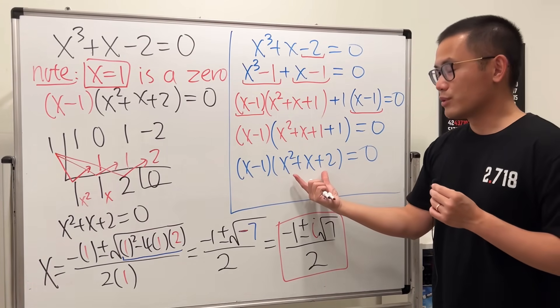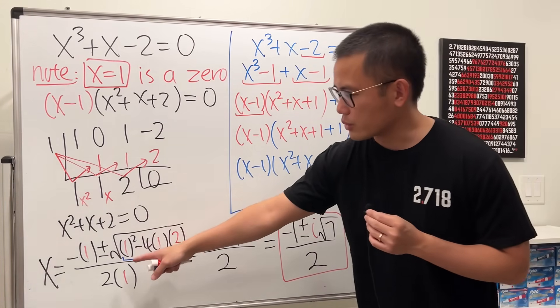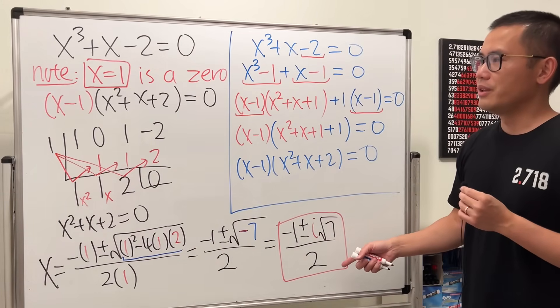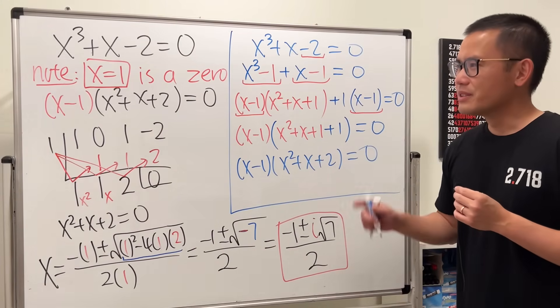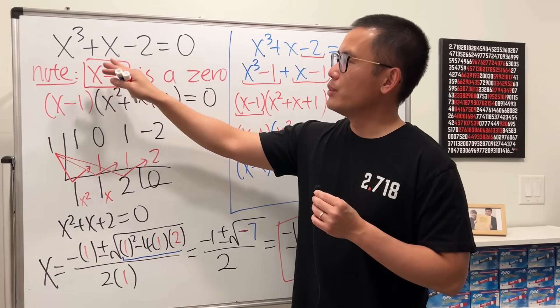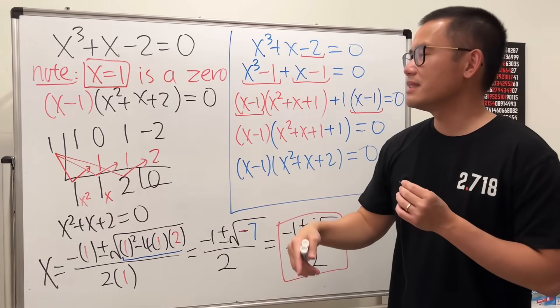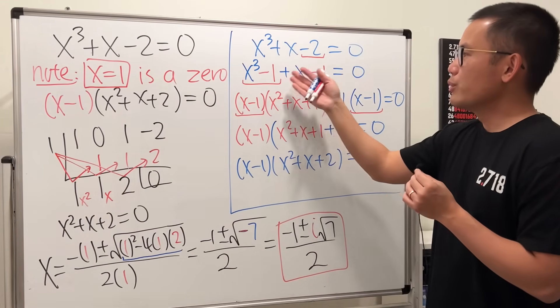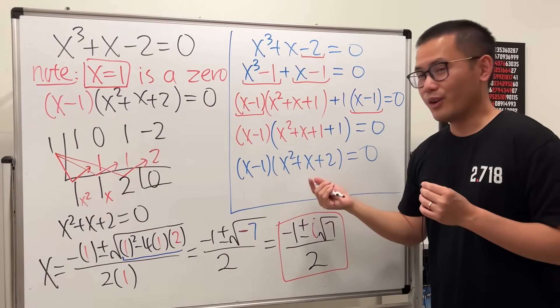So once you get to here, again, this right here is just 1, this right here is just quadratic, so you can solve it by the quadratic formula like how we did it here. So that's it. Okay, so next time after you got zero right by using the rational zero test, you can try to break it apart like this. And hopefully this helps.